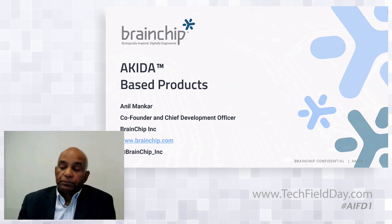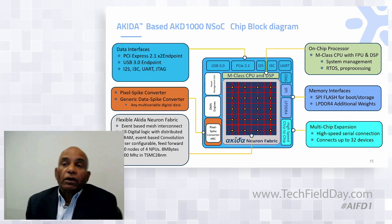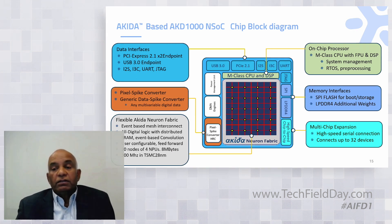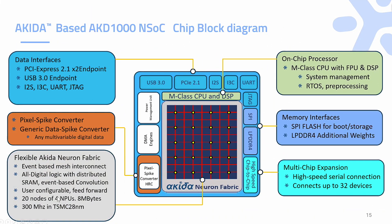Let's talk about Akira-based products. The first product is the Akita AKD-1000, which has 20 nodes — four NPUs in each node — and uses about eight megabytes of memory, implemented in TSMC 28-nanometer. To bring data from outside into the chip to run neural networks, we have two interfaces: PCIe or USB, I2S for getting audio samples, I2C for other sensor data, the pixel-to-spike converter or generic data-to-spike converter, and all the power management is included on chip.